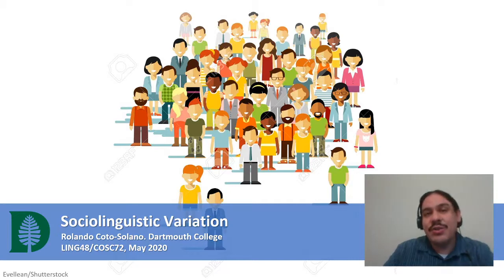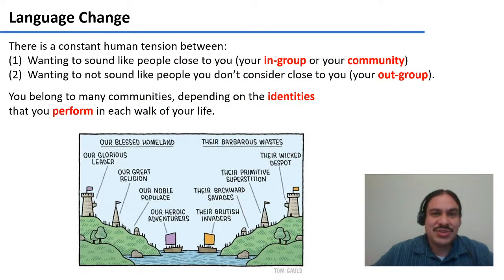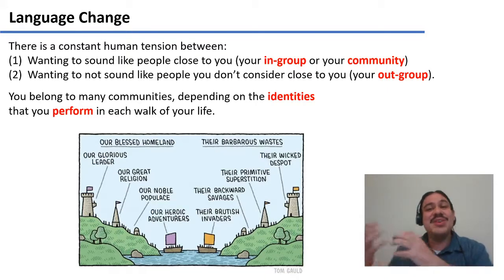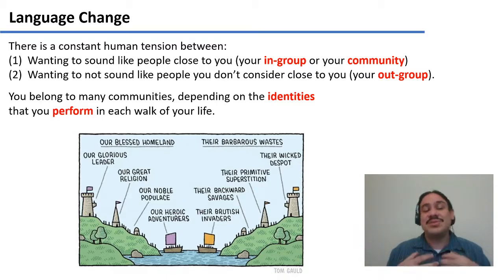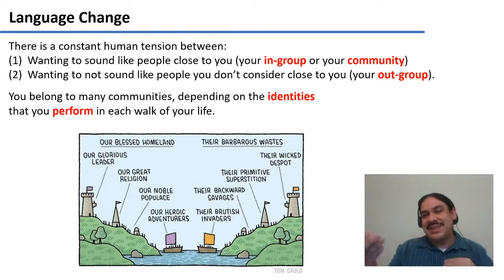Here we're going to look at a third source of variation: sociolinguistic variation. As we saw in week three, there is a constant tension when you speak between wanting to sound like the people close to you — the people you like — and wanting to not sound like those not in your group. There's a constant tension between wanting to sound like your in-group and not wanting to sound like an out-group or communities you don't identify with.